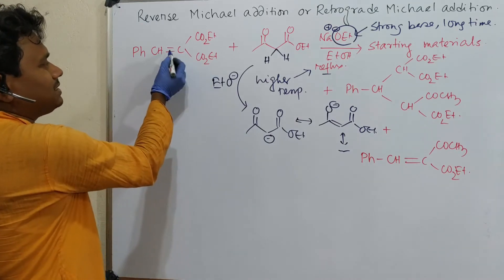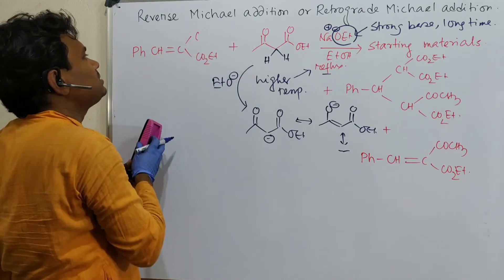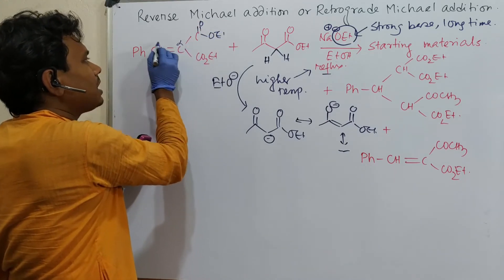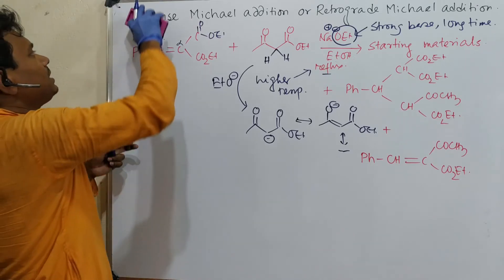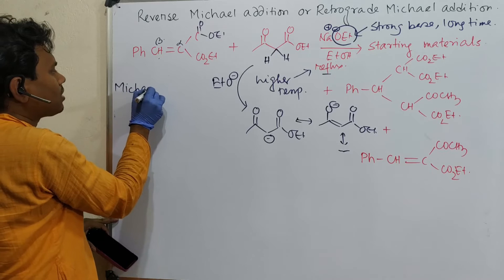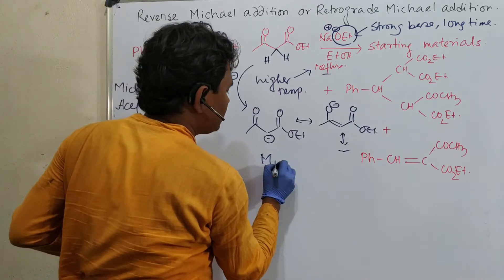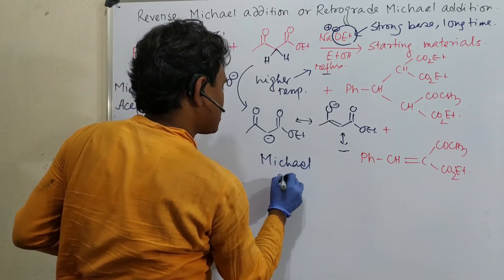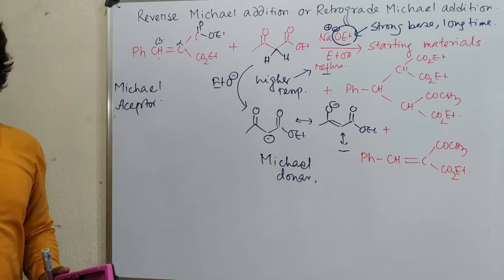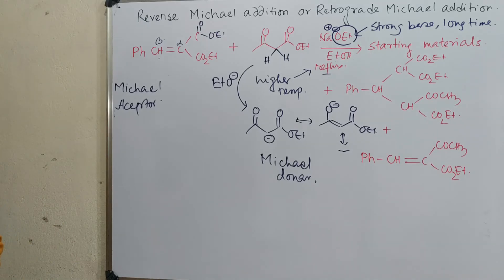Since this nucleophile is generated, and this alpha-beta unsaturated carbonyl derivative is present — this is actually a Michael acceptor — with alpha and beta positions identified, this is the Michael acceptor and this is the Michael donor. Now what happens is this carbanion attacks the Michael acceptor, resulting in nucleophilic addition.